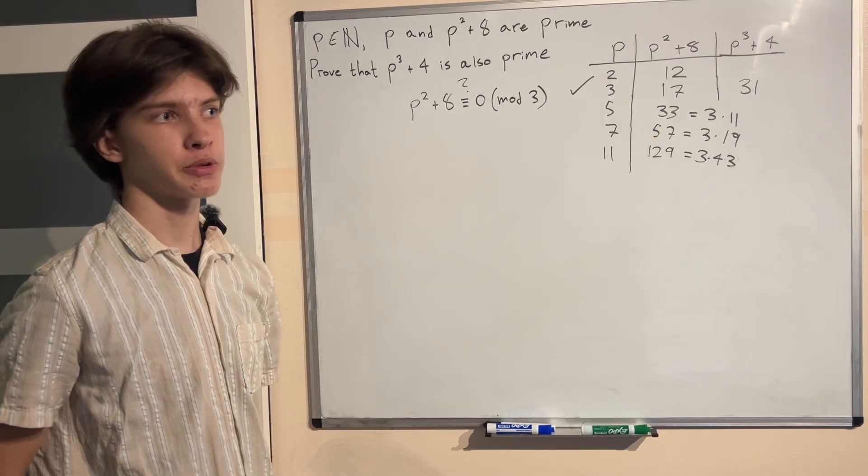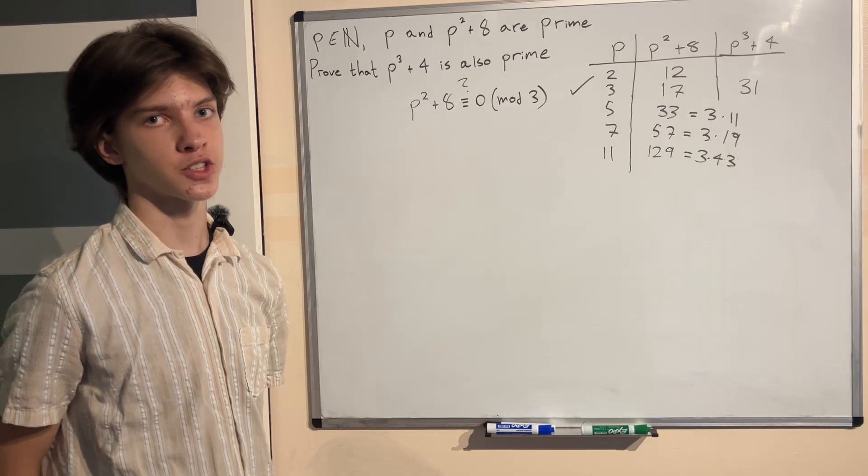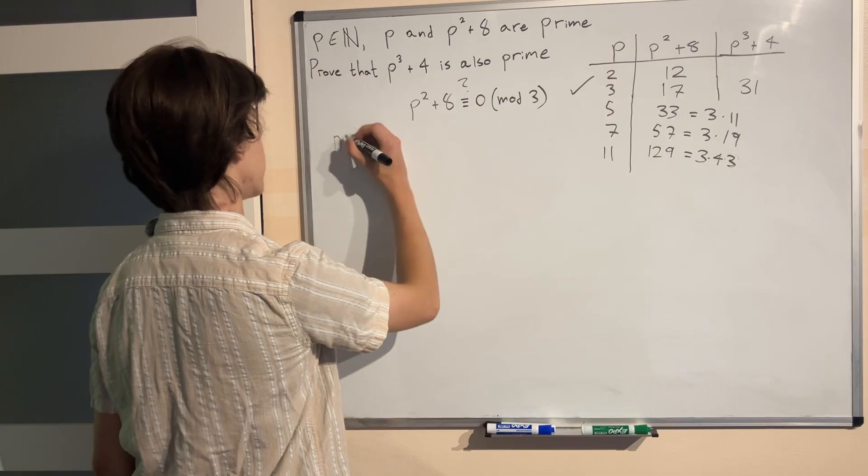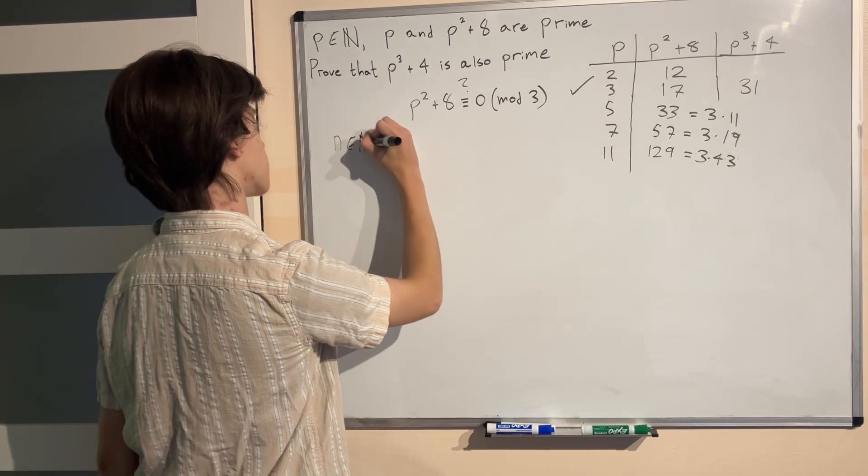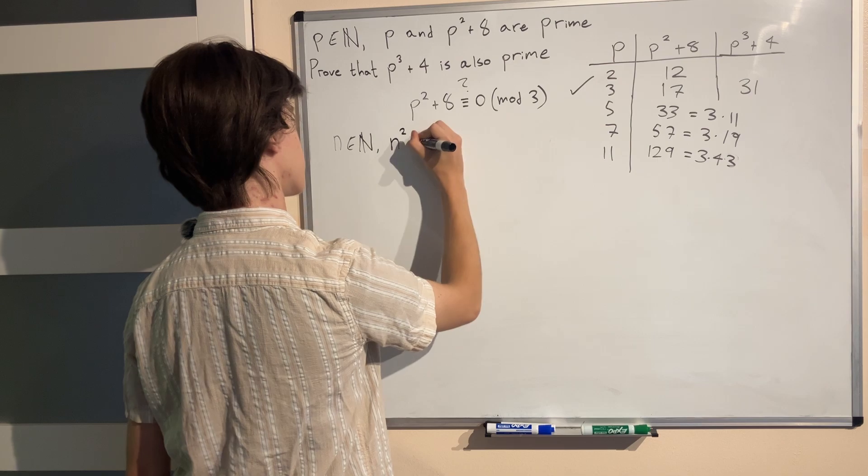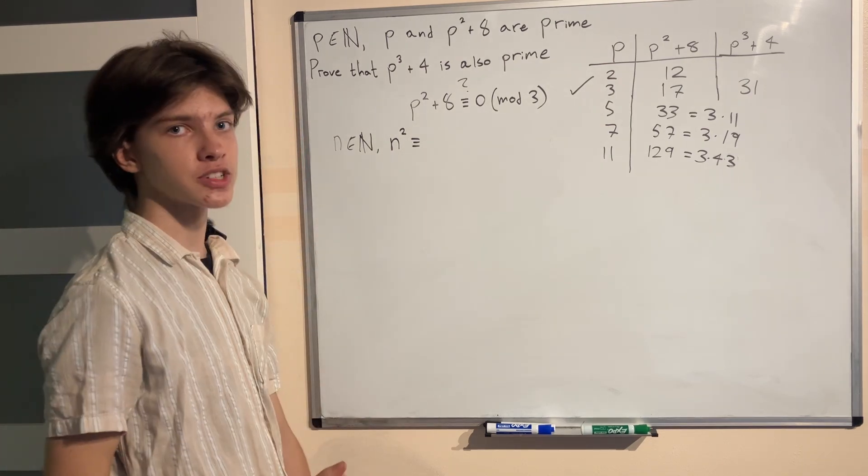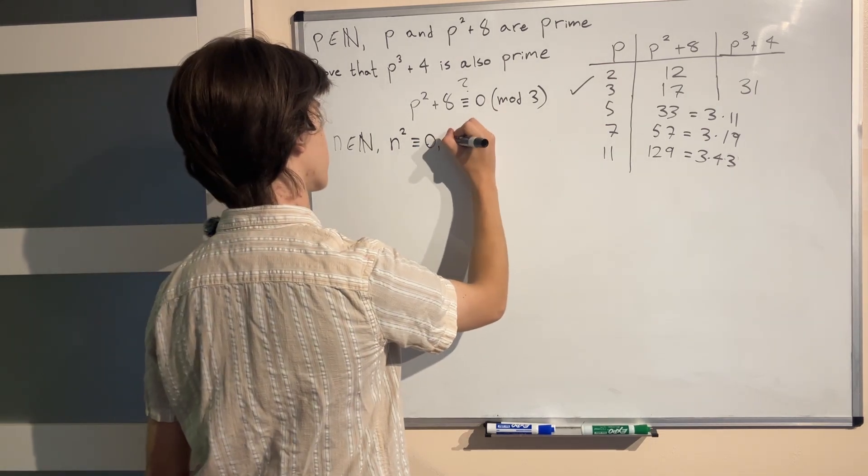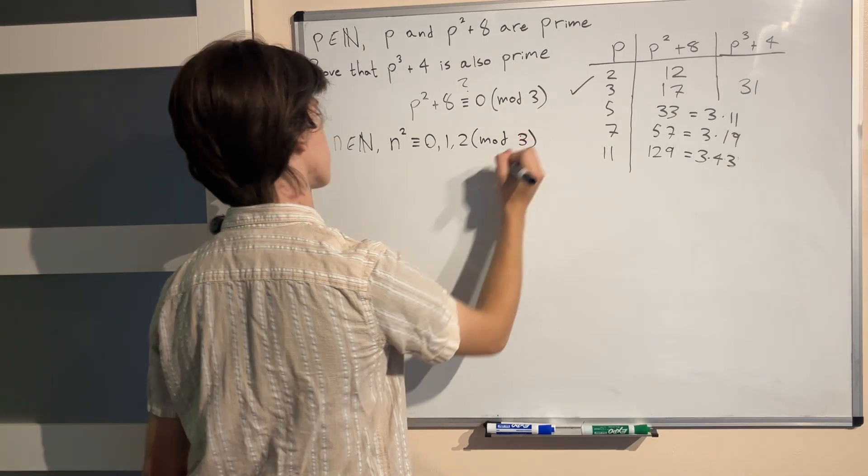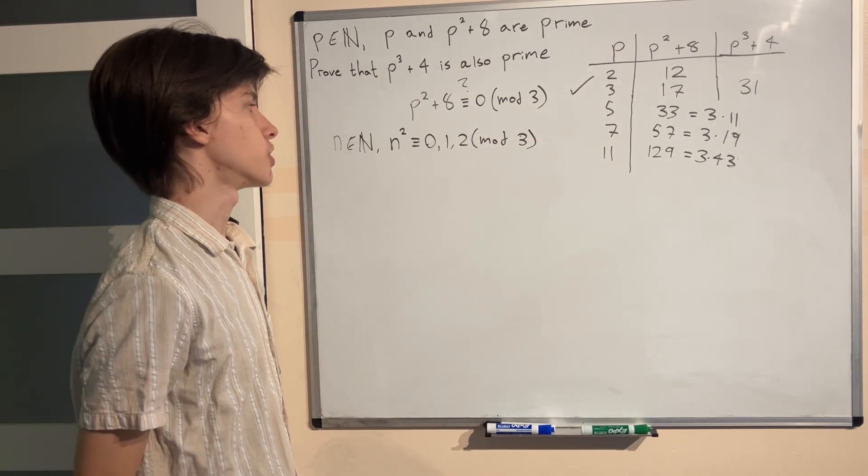Well first we would have to know something about squares in mod 3. Let's consider any natural number some n that is squared in mod 3. n² you would assume that the possible outcomes would be 0, 1 or 2 in mod 3. Right? Because these are in general the possible outcomes of anything in mod 3.